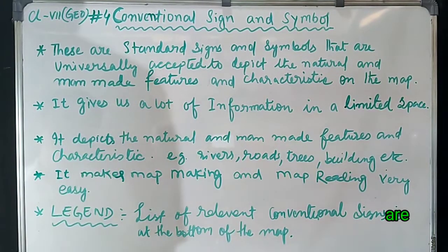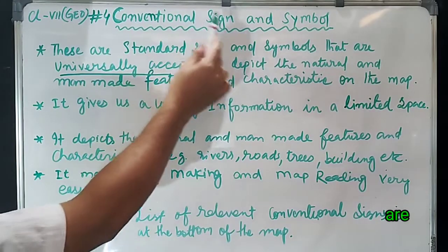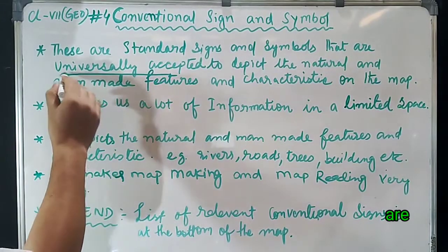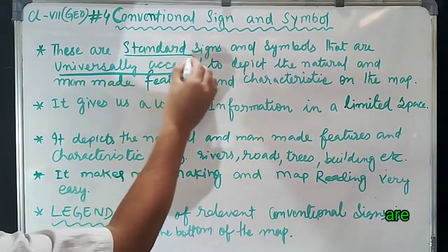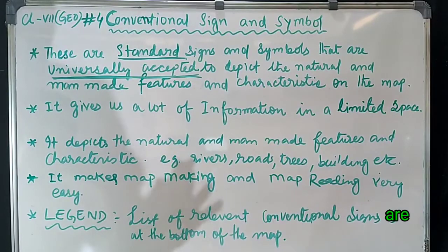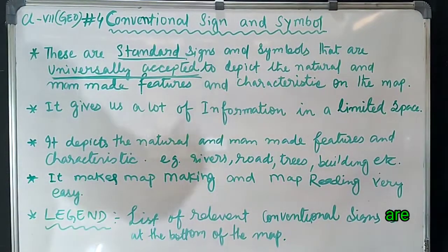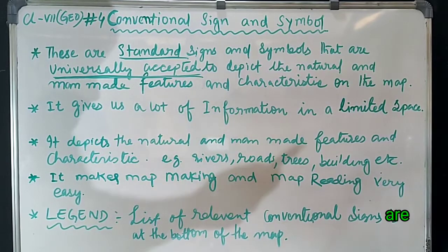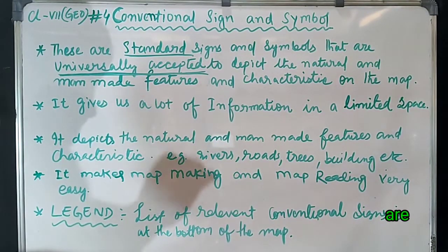Here it is written 'universally accepted,' which means these conventional signs and symbols are accepted internationally — by the whole world, or we can say accepted by all countries. They are called standard signs because they are internationally accepted. It means conventional signs for our country are not different from others — all countries of the world use the same signs and symbols to show the same features.